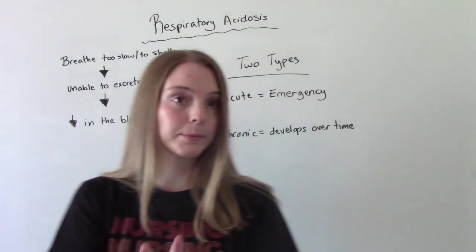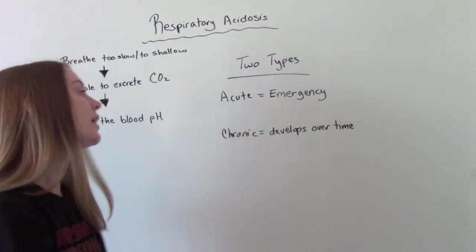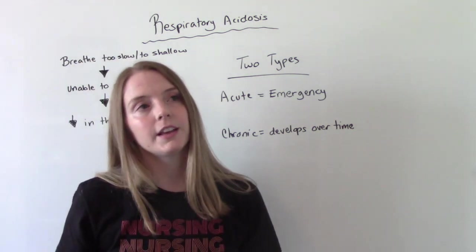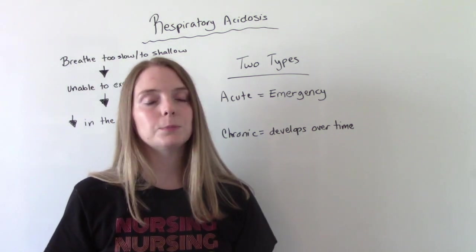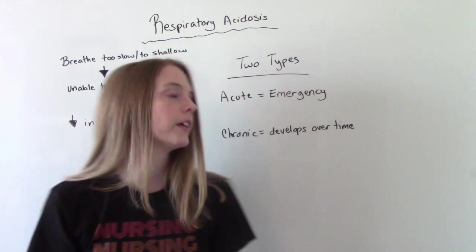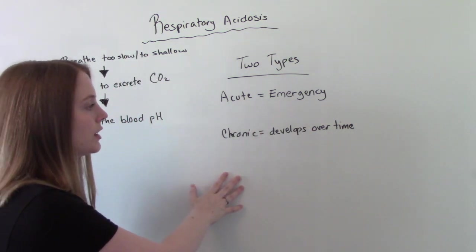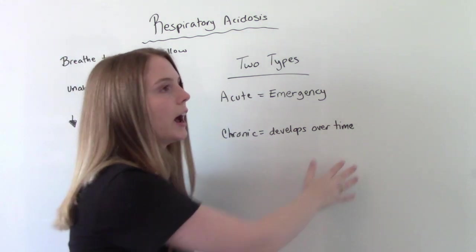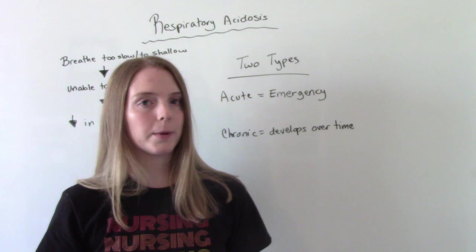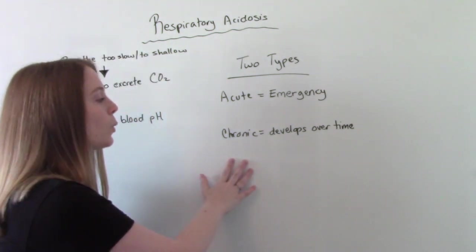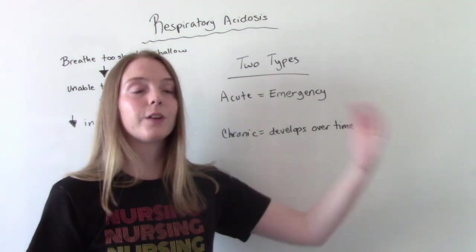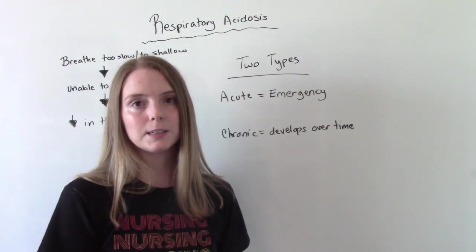There are two types: acute and chronic. Acute respiratory acidosis is an emergency — if we don't do anything to help these people, they will die from this. Chronic respiratory acidosis develops over time and might not have those obvious symptoms we're going to talk about. It can become life threatening later on if we don't do anything to help these people.